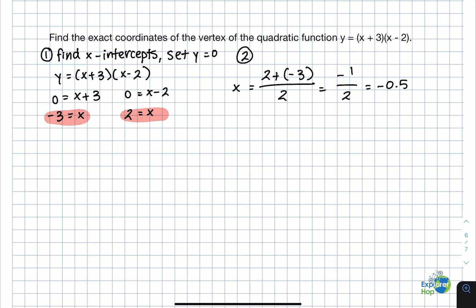So now that we have the axis of symmetry, which is the x-coordinate of the vertex, we can substitute this x-value back into the original equation to solve for the y-value of the vertex, and then we'll have the exact coordinates.